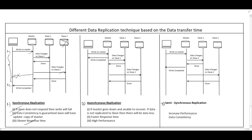In asynchronous replication, when a write request arrives at the master, the master immediately writes to its own database and returns a success response to the client — so the thread is held for a very short time. Eventually, after some time, the master replicates the data to slave 1, gets confirmation, then replicates to slave 2 and gets confirmation. The client waits much less time compared to synchronous replication.